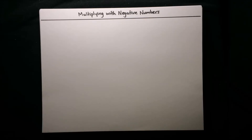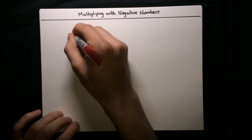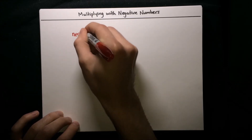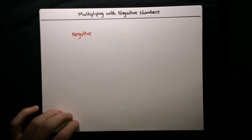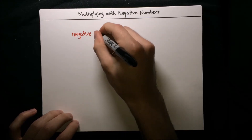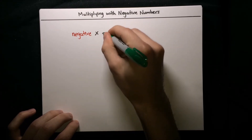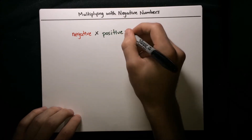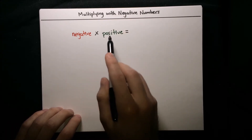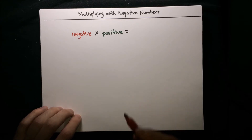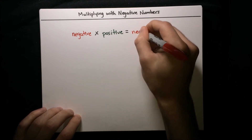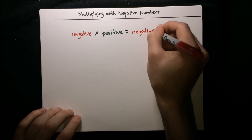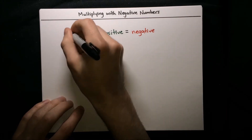In this video I'm going to show you how to multiply with negative numbers. First let's consider what happens when we have a negative number and we multiply it by a positive number. Whenever we have a negative number times a positive number, the result is going to be negative. That's a big thing to remember here.